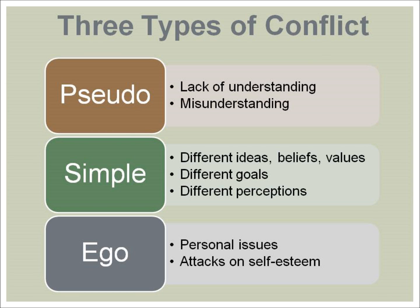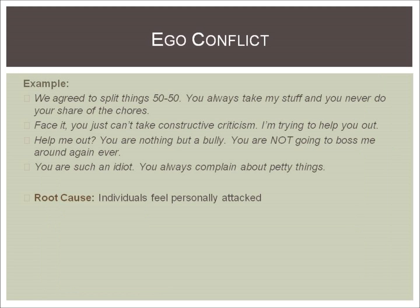The final type of conflict is ego conflict. This type results when people feel personally attacked. These examples all show conflict resulting from personal attacks. Example one: 'We agreed to split things 50-50. You always take my stuff and you never do your share of the chores.' Example two: 'Face it, you just can't take constructive criticism. I'm trying to help you out.' Example three: 'Help me out. You are nothing but a bully. You are not going to boss me around ever again.' Example four: 'You are such an idiot. You always complain about petty things.'